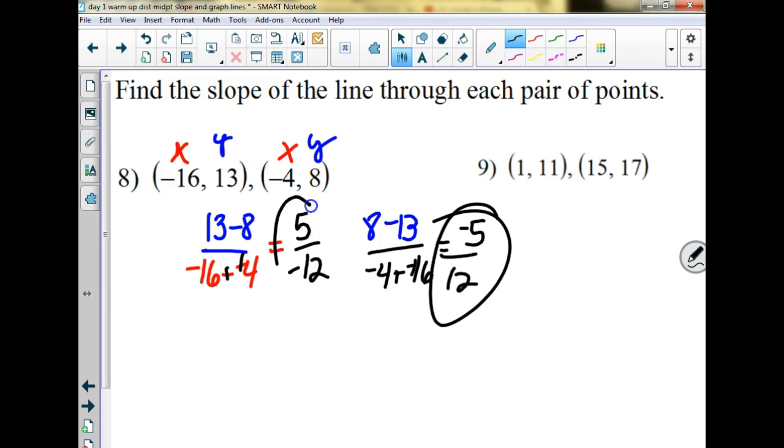You'd get negative 5 over positive 12. Are those the same thing, guys? Yeah. It doesn't matter where the negative is. This we would maybe think go up 5 and left 12. This would be down 5 and right 12. Same difference. All the same line. Do I need to do another one or you got slope? You're going to remember to put the Y's on the top, right?